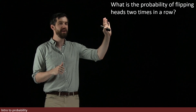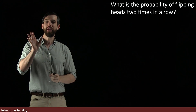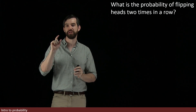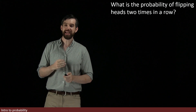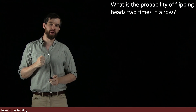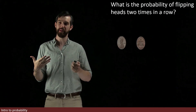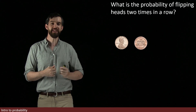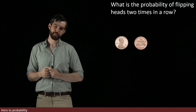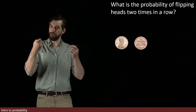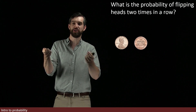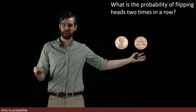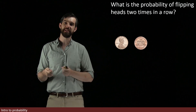Let's begin with a specific example: what is the probability of taking a coin and flipping it heads twice in a row? For one single flip, there are two different possibilities. Either the coin comes up heads or it comes up tails. Those two cases are equally likely, so there's a 50% chance it's heads and a 50% chance it's tails.